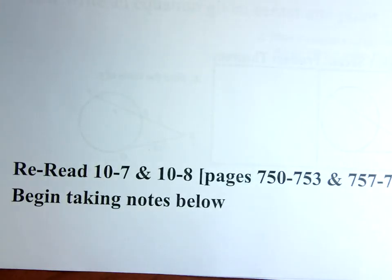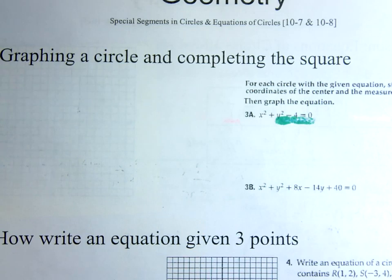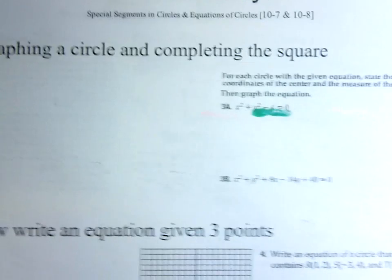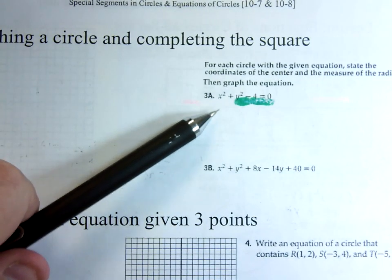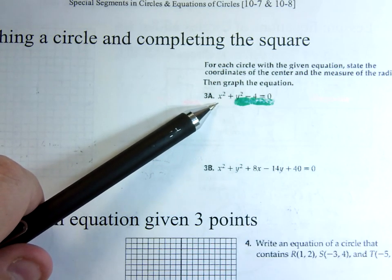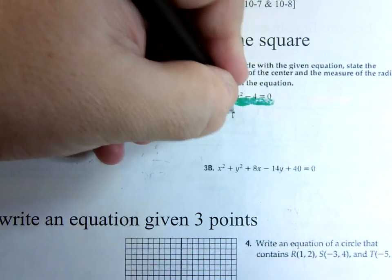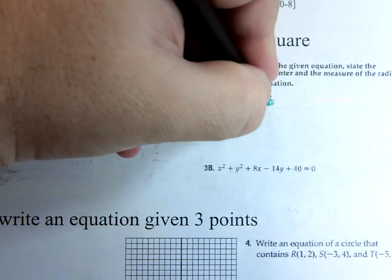Last page. So here, they want us to complete the square for each equation and then graph the circle. The first one is pretty straightforward. It's almost in standard form as it is. What do you need to do to this so it becomes in standard form? So it looks like what we expect. Yeah. Add the 4 to the other side. We're pretty much done. So you're going to get x squared plus y squared equals 4. There's my equation. And now we're ready to graph this thing.